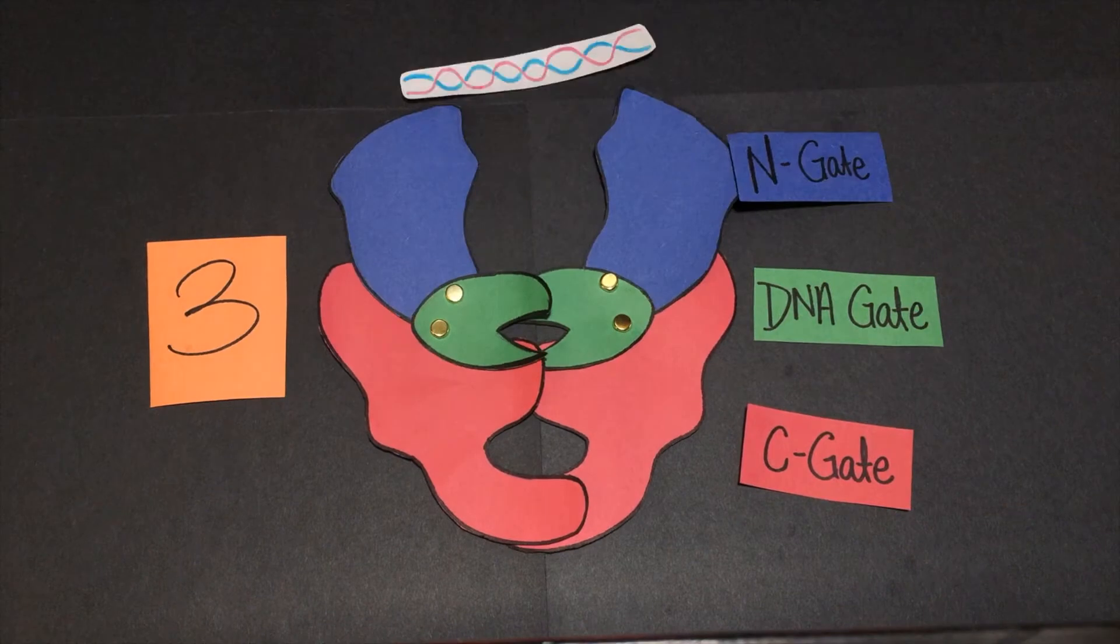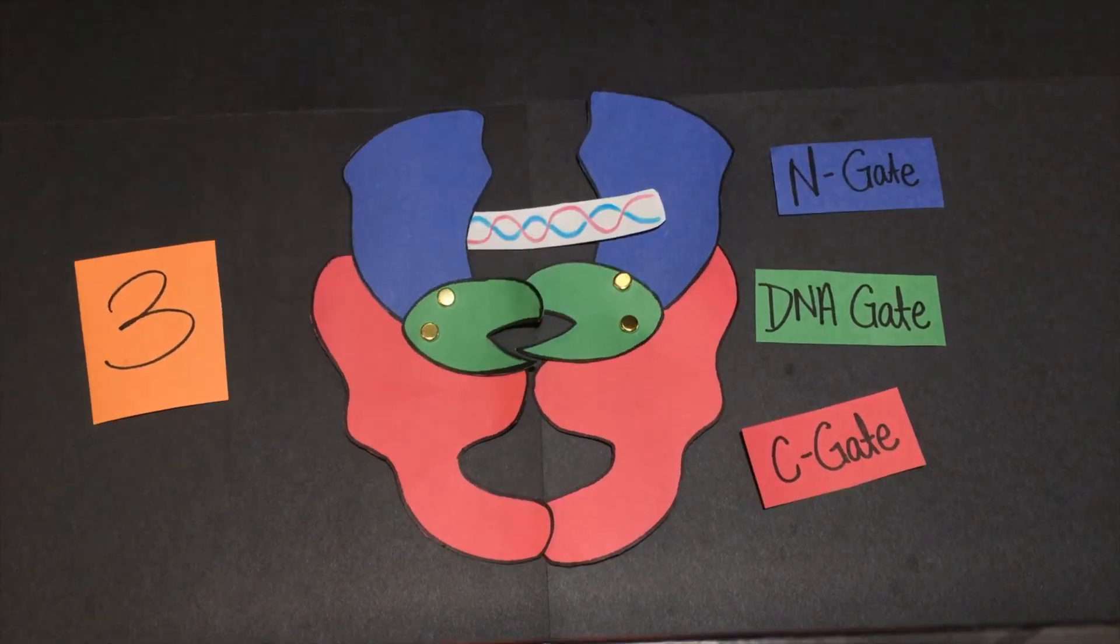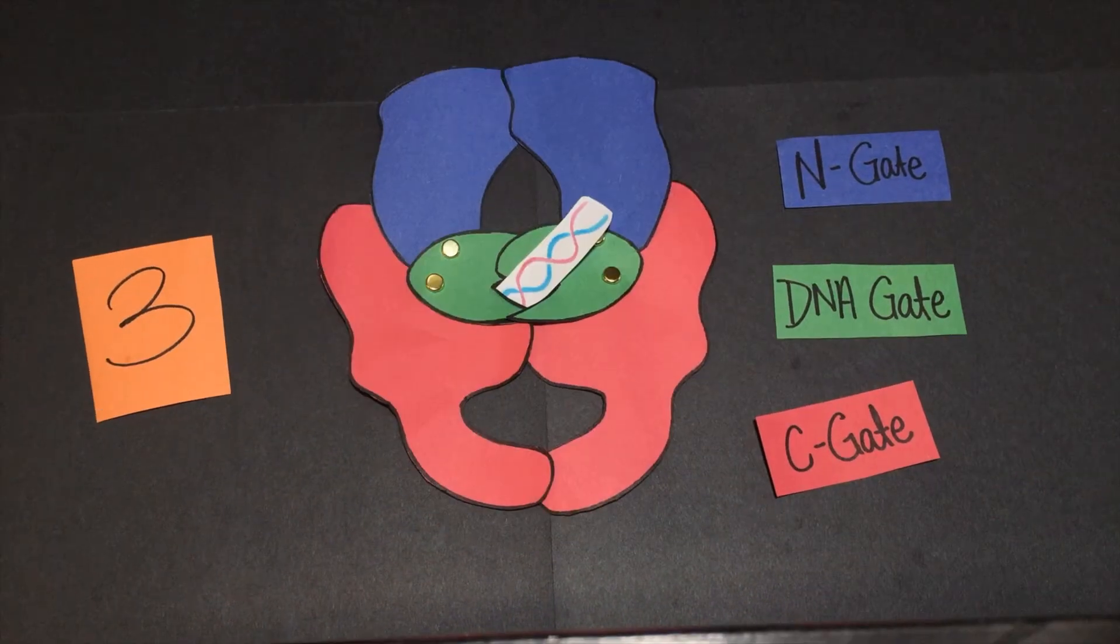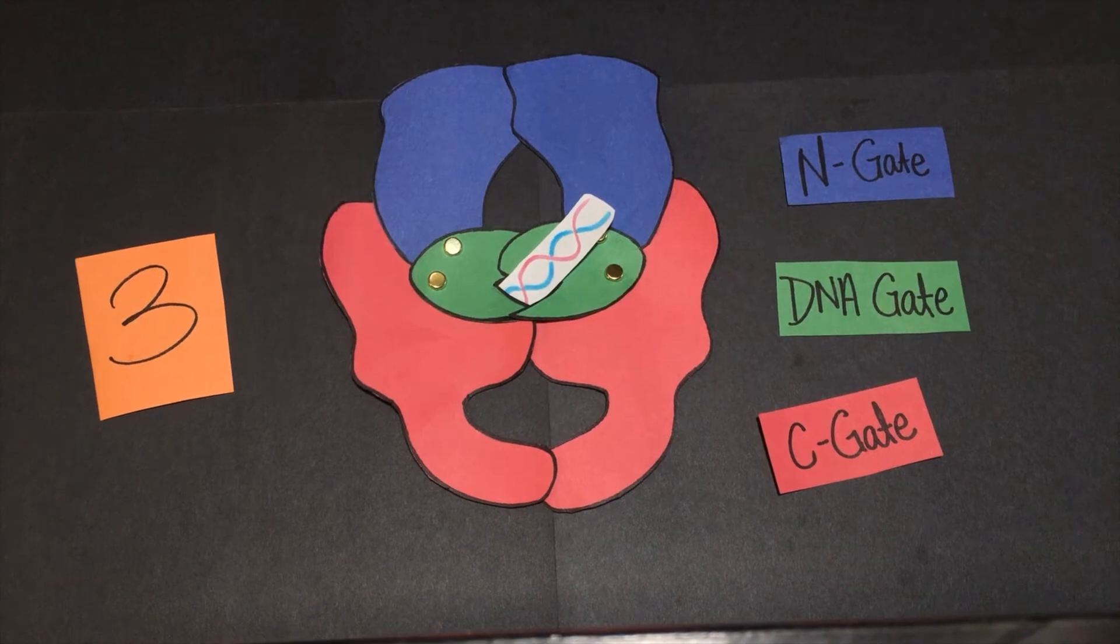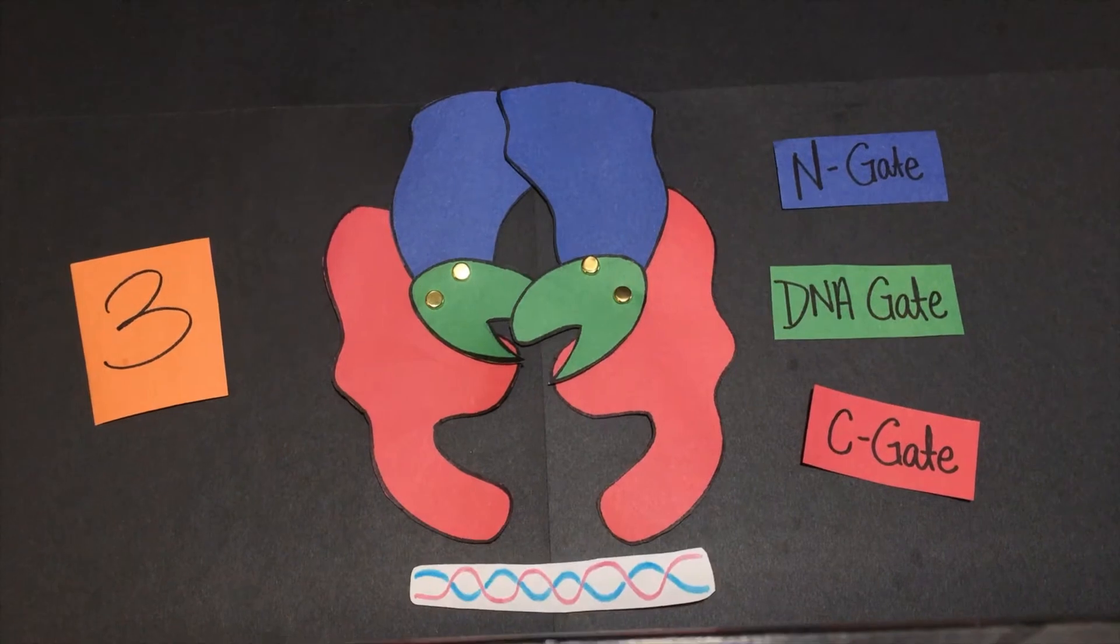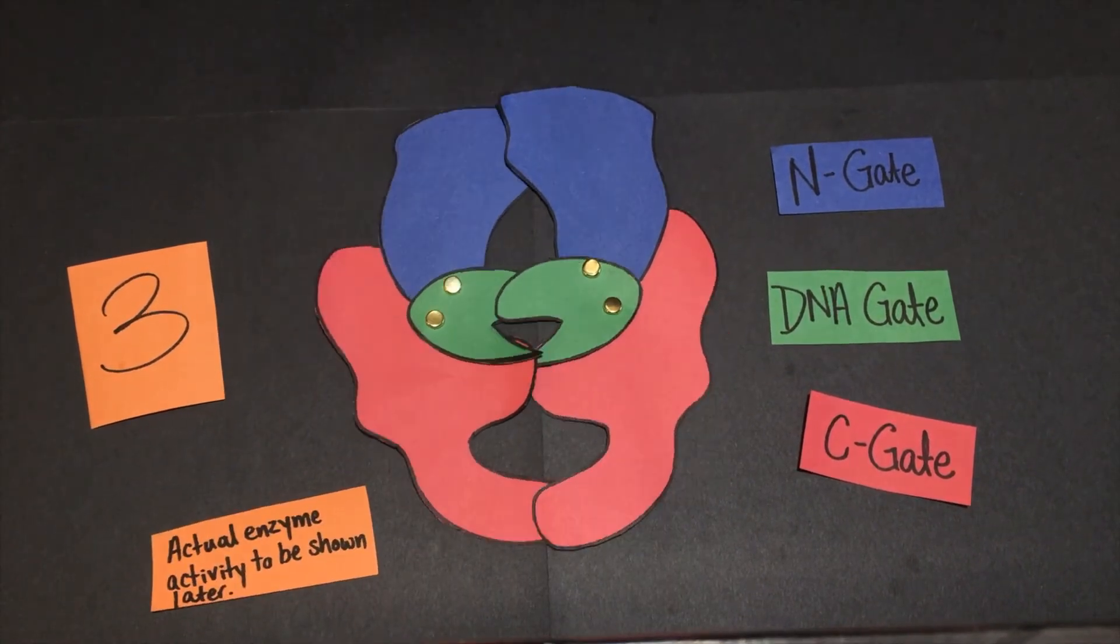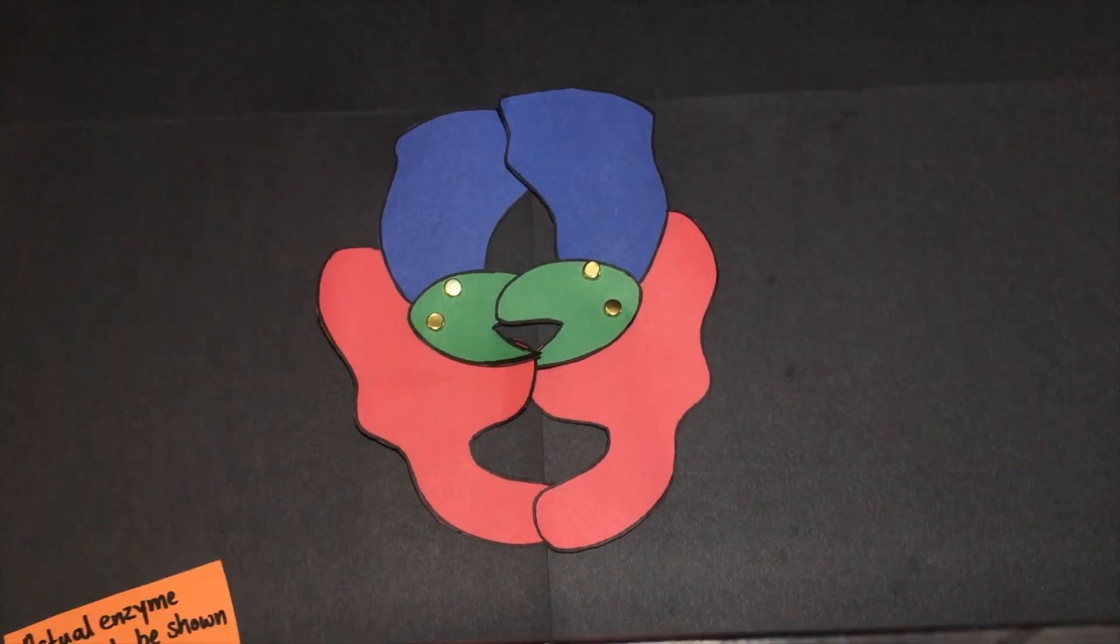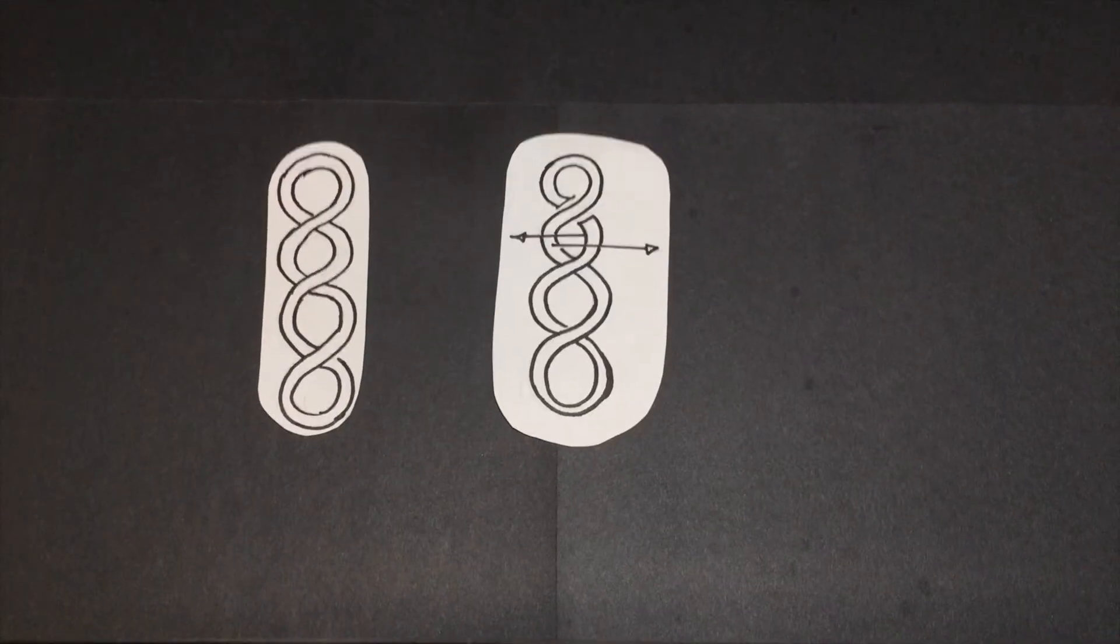Not too surprisingly, the N gate is where the N terminus is, but more importantly, this is where the DNA duplexes enter the enzyme. The DNA gate is where majority of the catalytic activity of the Top 2a takes place. Conformational changes of the DNA gate are connected to conformational changes to the C gate, where DNA duplexes exit. Each catalytic event carried out by Top 2a relieves two coils of the DNA.